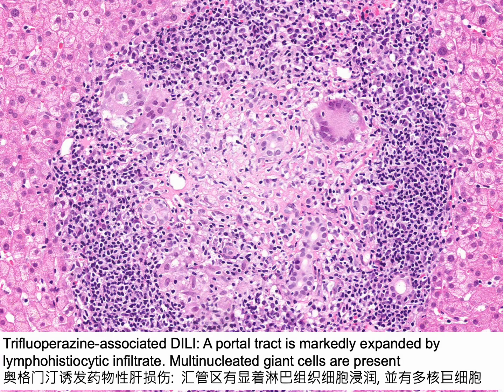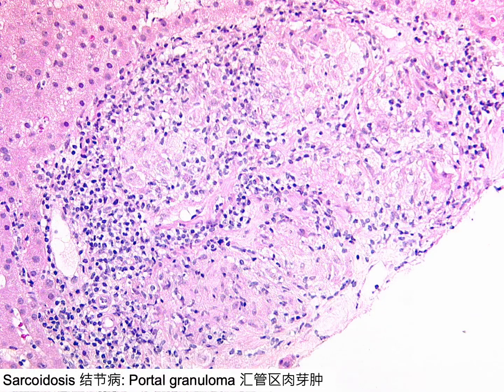This is an example of trifluoperazine-induced liver injury. The portal tract is significantly expanded by a lymphohistiocytic and granulomatous infiltrate featuring multinucleated giant cells. This liver biopsy is from a patient with hepatic sarcoidosis, showing multiple non-caseating epithelioid granulomas within a portal tract.